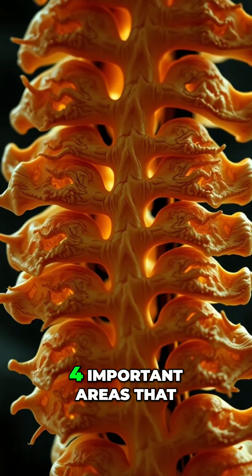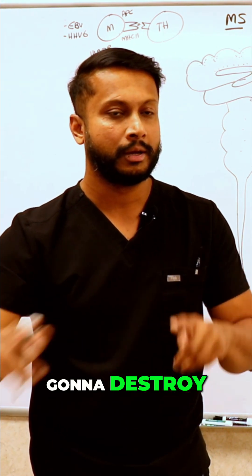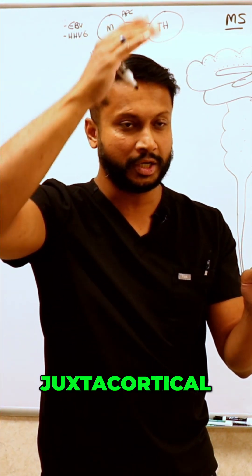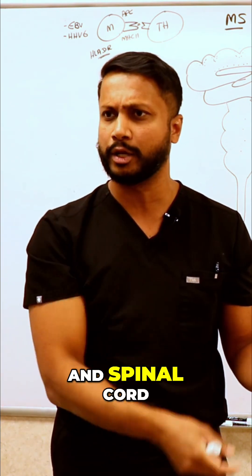So those are the four important areas that you need to know that MS is going to destroy. Periventricular, juxtacortical, infratentorial—essentially saying brainstem—and spinal cord.